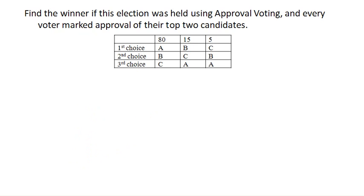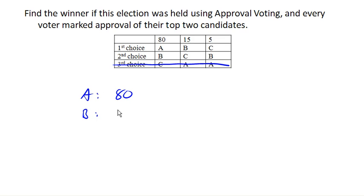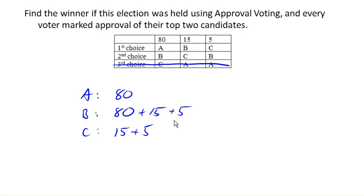Now, you might be wondering what could possibly be wrong with approval voting. Here we have a traditional voting preference, and suppose that everyone is okay with their top two choices. A would get 80 approvals. B is going to get 80 approvals as well. From these voters, B gets 15 approvals and C gets 15 approvals. These five people give C five approvals and B five approvals. So A receives approval from 80 voters, B receives approval from every one of the voters, and C receives approval from 20 voters.